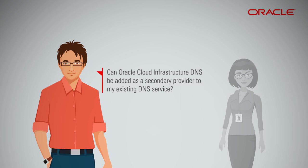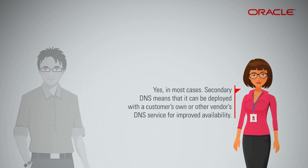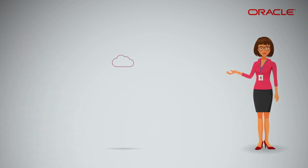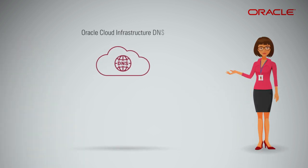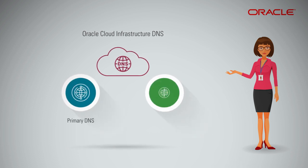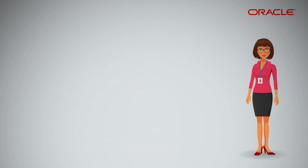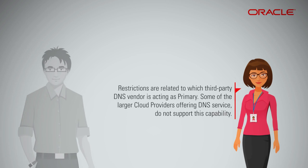Can Oracle Cloud Infrastructure DNS be added as a secondary provider to my existing DNS service? Yes. In most cases, secondary DNS means it can be deployed with a customer's own or other vendor's DNS service for improved availability. The Oracle Cloud Infrastructure DNS can be deployed as either the primary or secondary DNS server. Restrictions are related to which third-party DNS vendor is acting as primary. Some of the larger cloud providers offering DNS service do not support this capability.